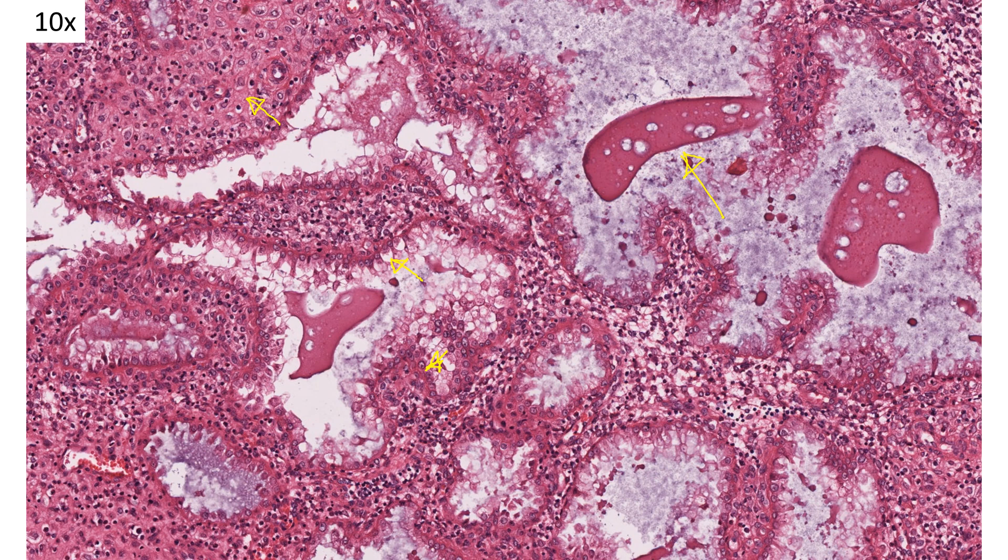So if you see a decidualized background with this type of change and you don't have any history, think: could this patient be pregnant? If you don't know the history, things can look quite atypical. But keep in mind that in the setting of pregnancy, these changes are quite common, and it's called the Arias-Stella phenomenon.